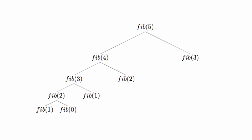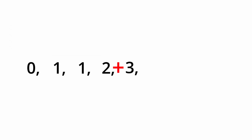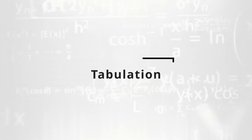Now let's get into the bottom-up slash tabulation approach. For this approach, since we know the base values to the sequence — fib 0 is 0 and fib 1 is 1 — we can build our solution up from there in an iterative way until we reach the Fibonacci number that we want. So instead of starting from the top and recursing down, we'll start with our base cases, add them together to get fib 2, then add fib 1 and fib 2 to get fib 3, and so on. This is the bottom-up approach — starting from the base cases and building up from there.